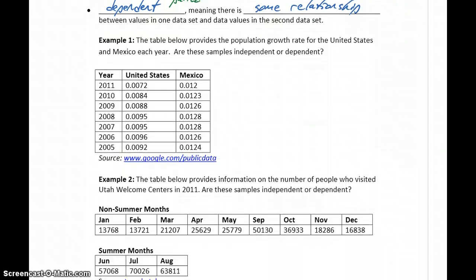In our first example, we have a table that provides the population growth rate for the United States and Mexico each year. All we want to answer for now is, are these samples independent or dependent? Looking at this data, we've got our population growth rate for the US, for Mexico, and then we have the years in which those occurred.